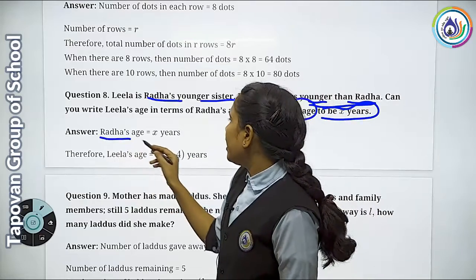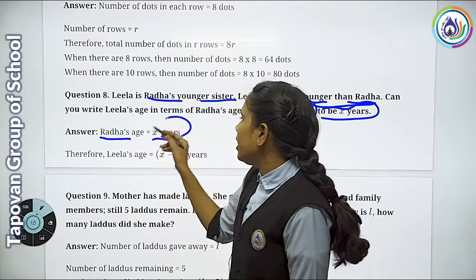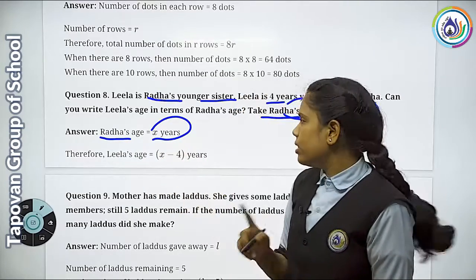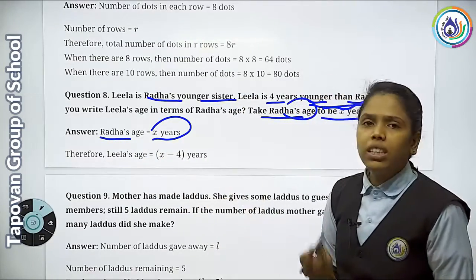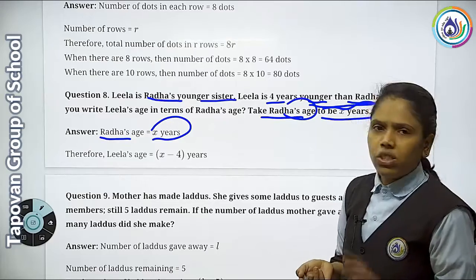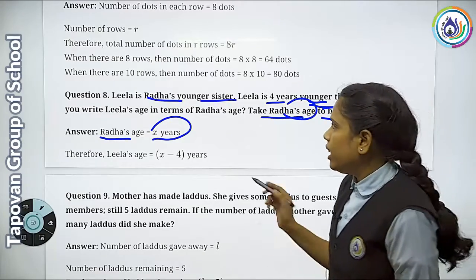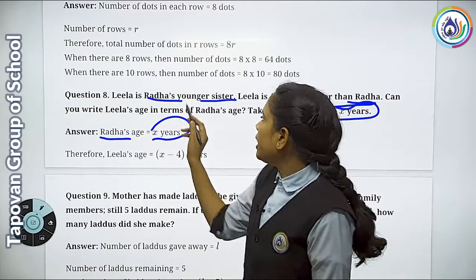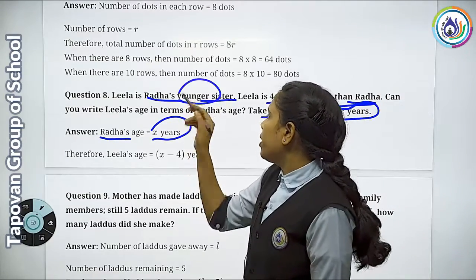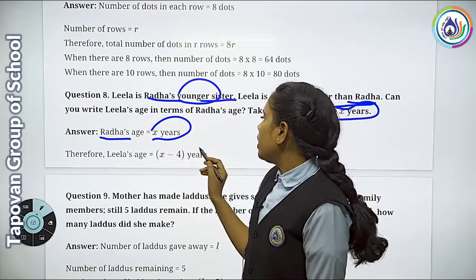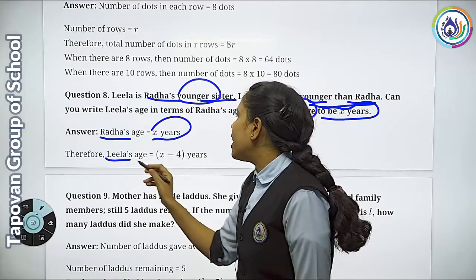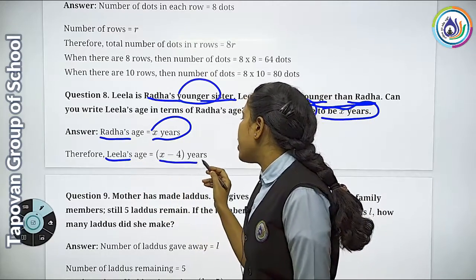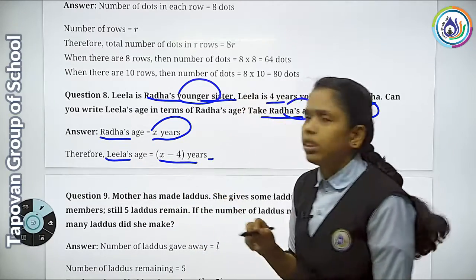The question itself says: what age do we take for Radha? x years. Now Leela is how much younger? 4 years. Younger means she is the younger sister. So 4 years. So Leela's age = x minus 4 years.